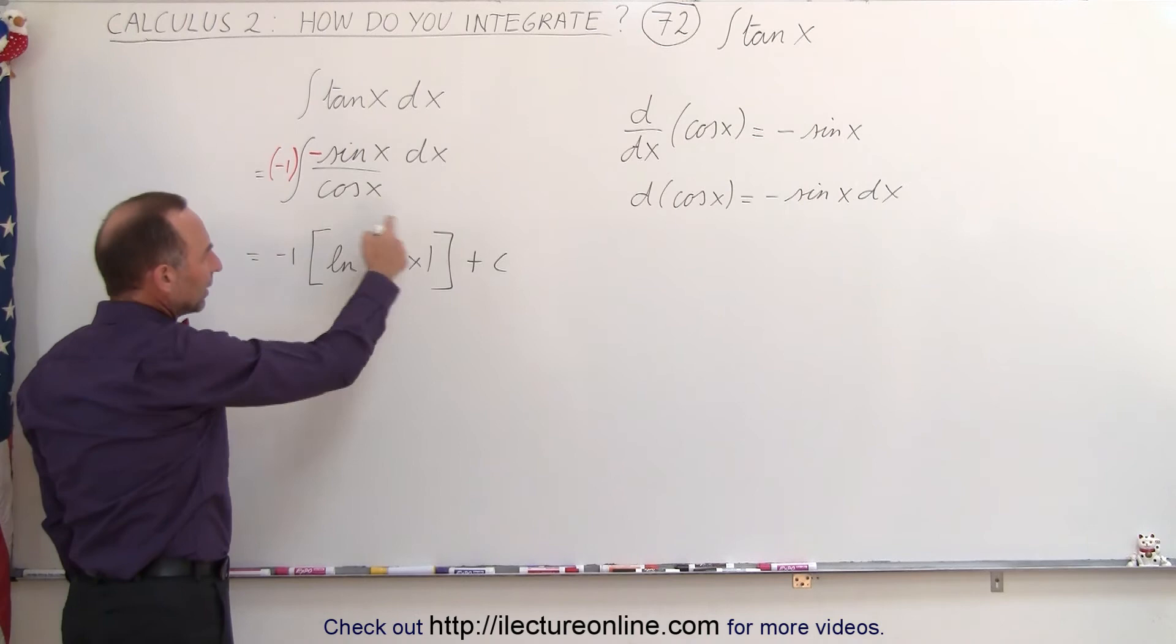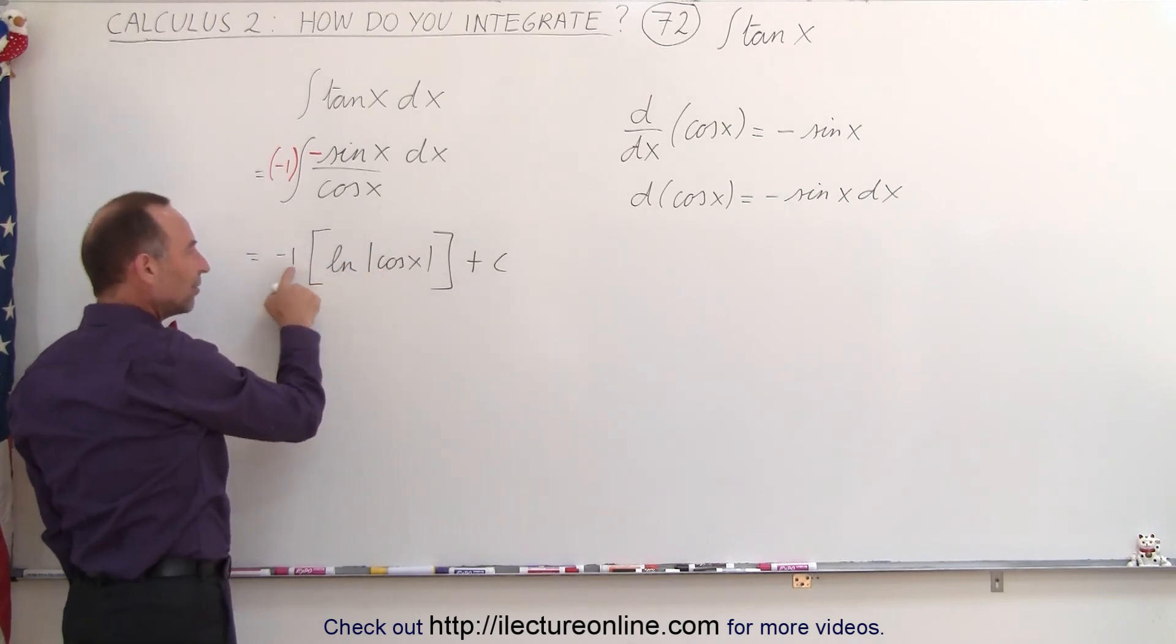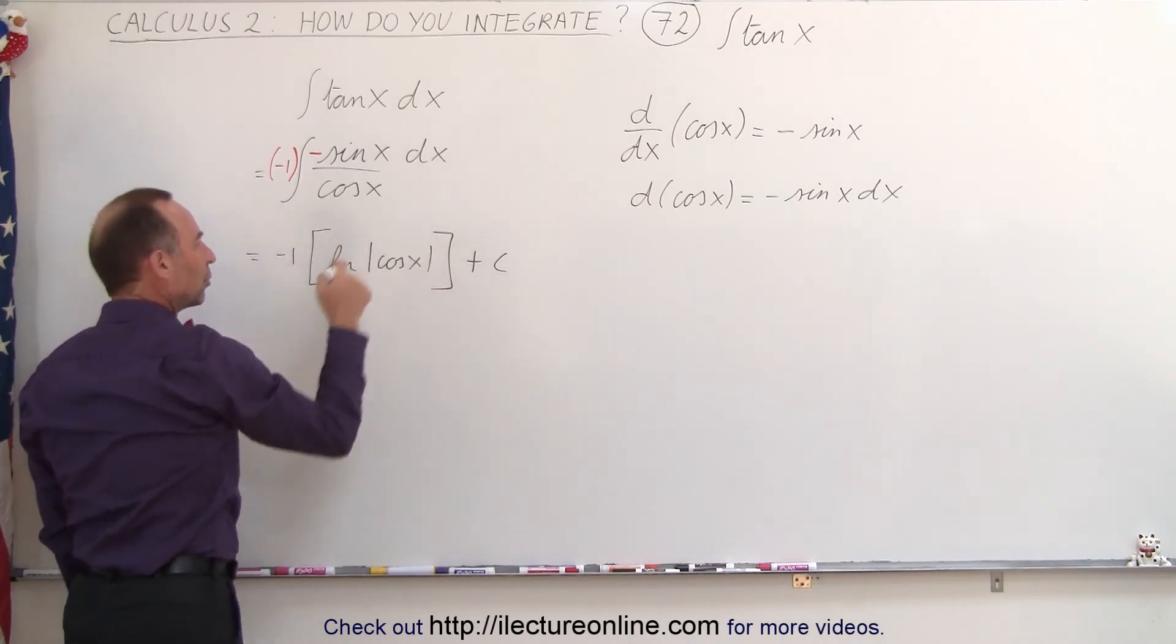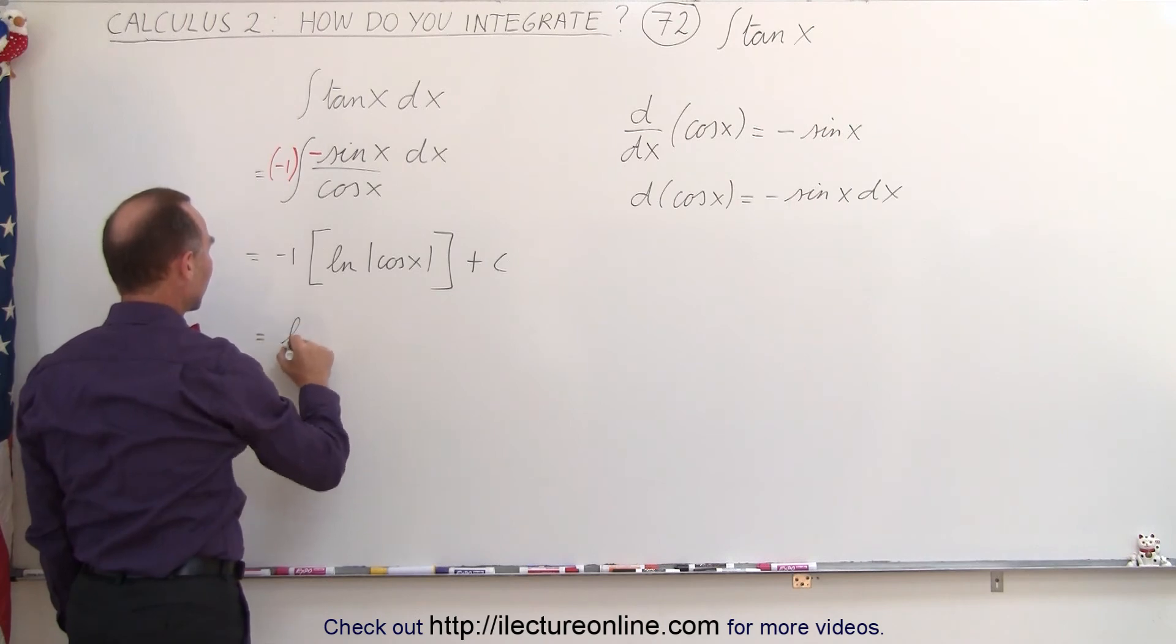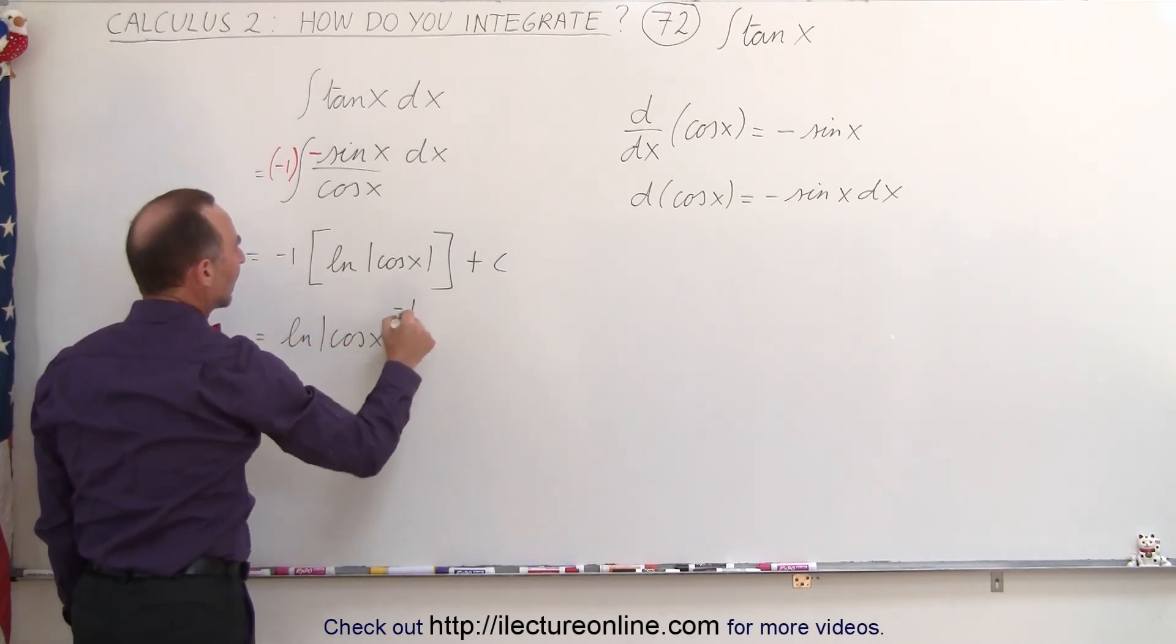Now this negative sign, we can leave it like this, or we can take this negative sign and place it as the exponent over here. So this can be written as the natural log of the cosine of x with a negative 1 exponent,